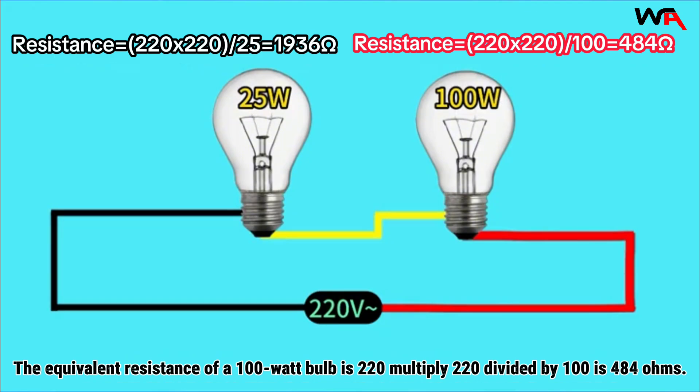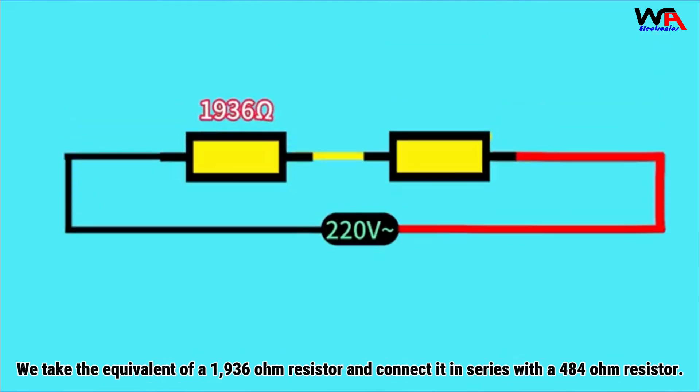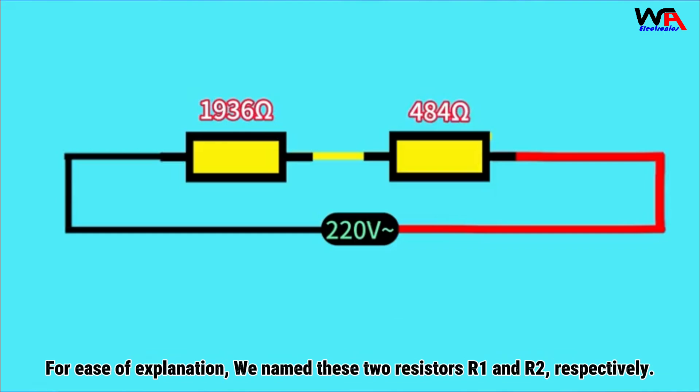We take the equivalent of a 1936 ohm resistor and connect it in series with a 484 ohm resistor. For ease of explanation, we named these two resistors R1 and R2 respectively.